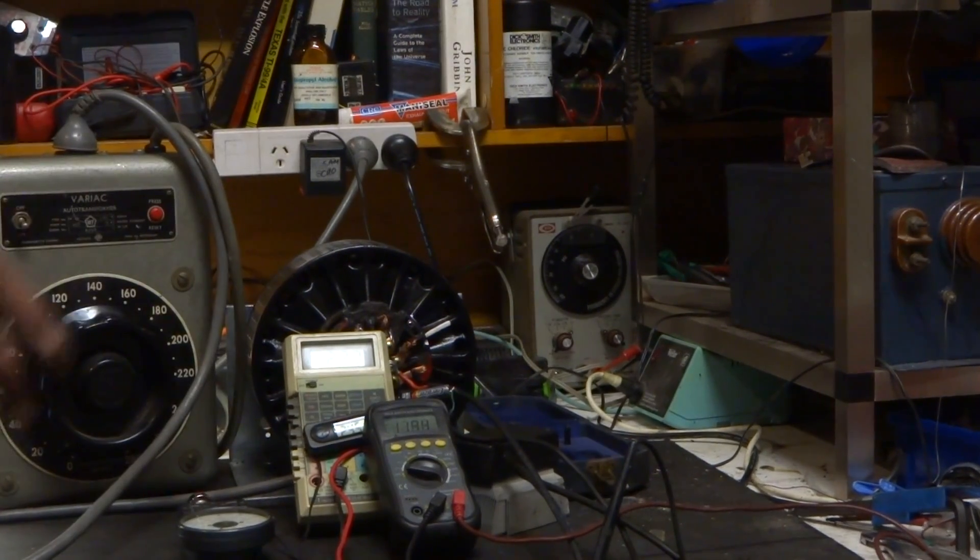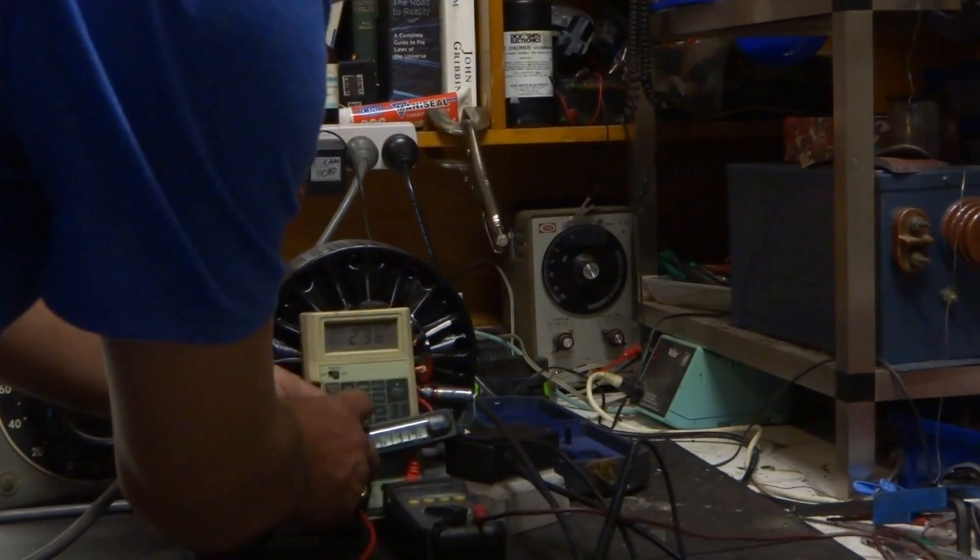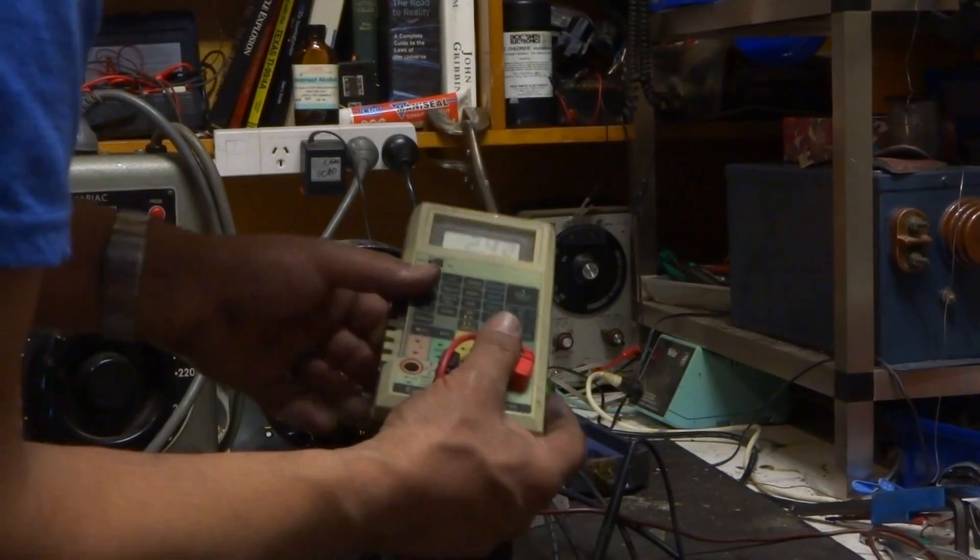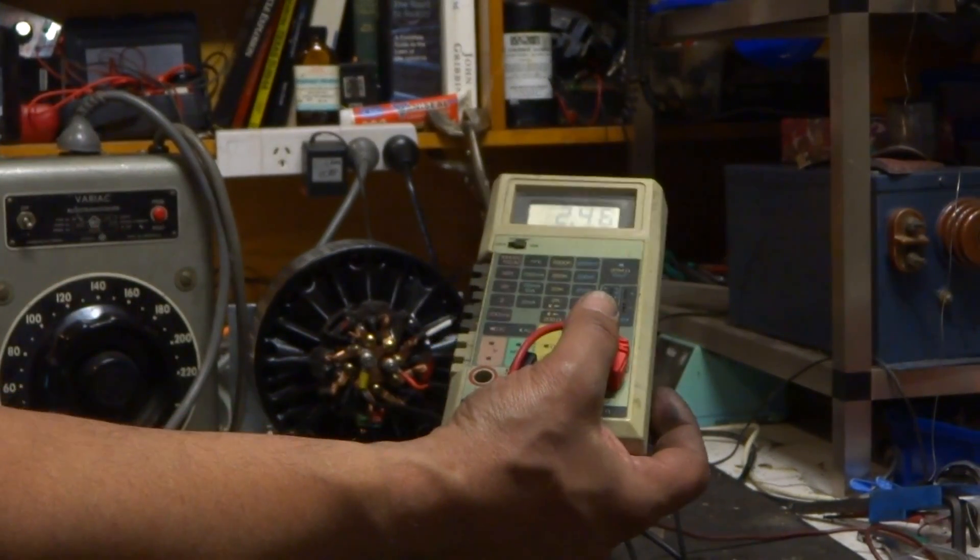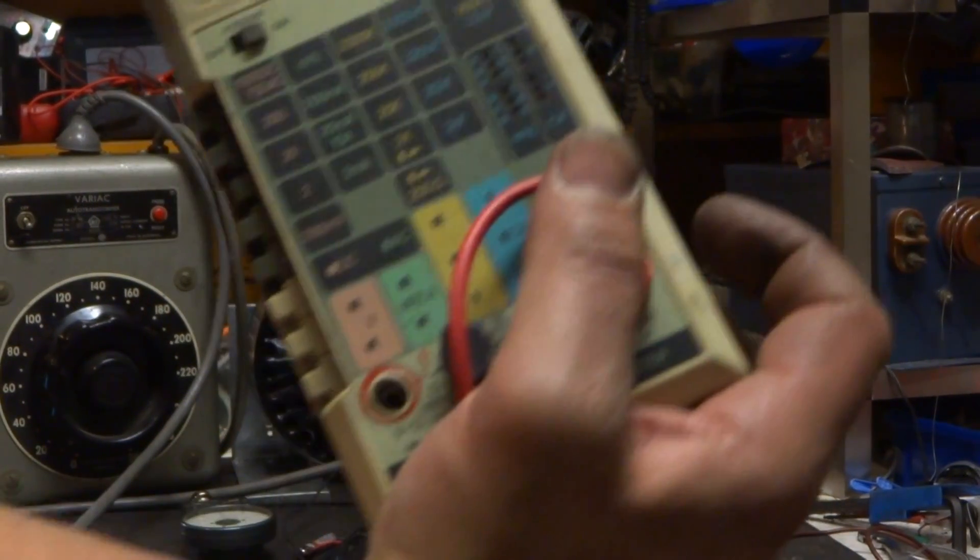And now we can see that the current has dropped from two and a half amps down to about 2.3 amps at the 12 volts. Let's make sure we're at 12. Yeah. As those partial shorts burn out, the current drops.